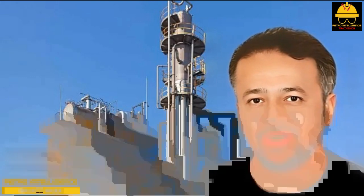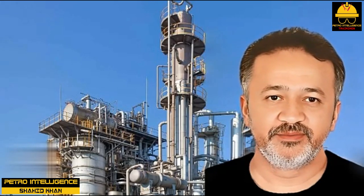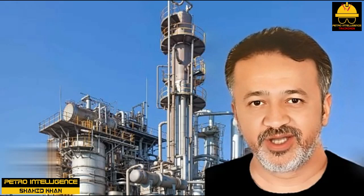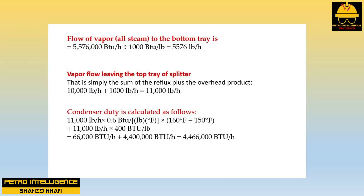The next part of the problem is to determine the vapor flow to the bottom tray. If we assume that the vapor leaving the reboiler is essentially steam, then the latent heat of condensation of this vapor is 1,000 BTU/lb. Hence the flow of vapor (all steam) to the bottom tray = 5,576,000 BTU/hr ÷ 1,000 BTU/lb = 5,576 lb/hr.